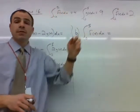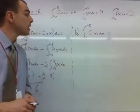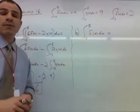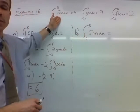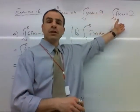Another one of our properties can be used with part b. We have the integral from 0 to 5 of f(x)dx. Now up here we were given the integral from negative 2 to 5 of f(x). We were also given the integral from negative 2 to 0.